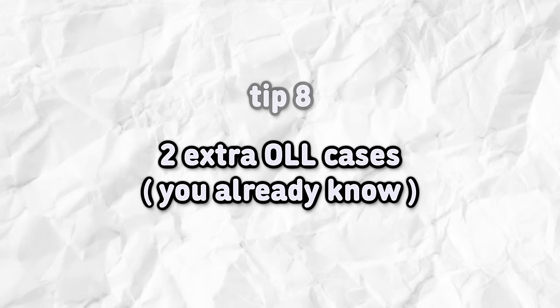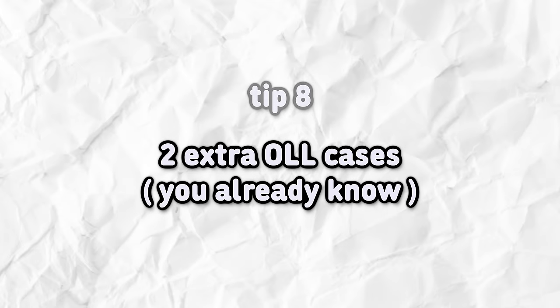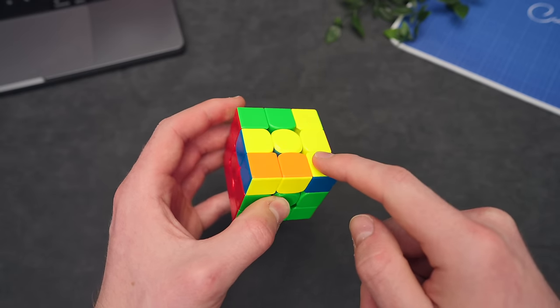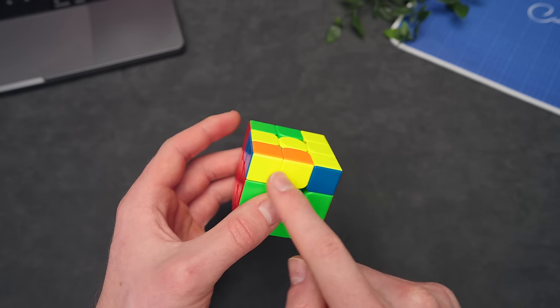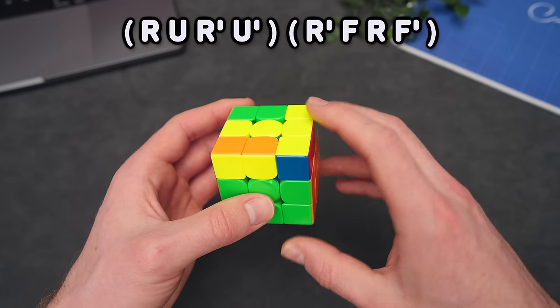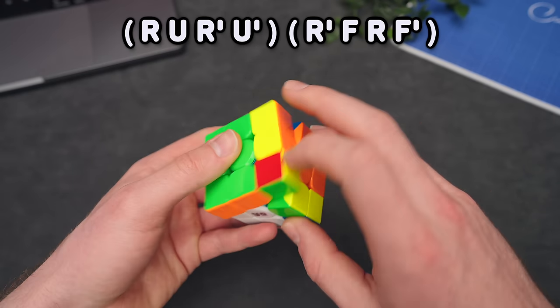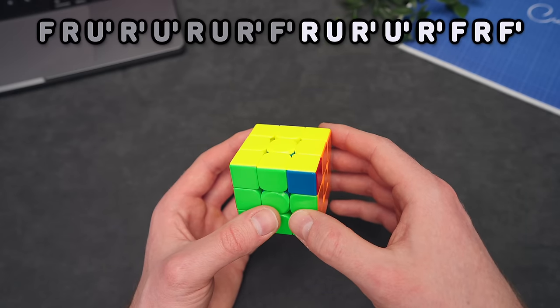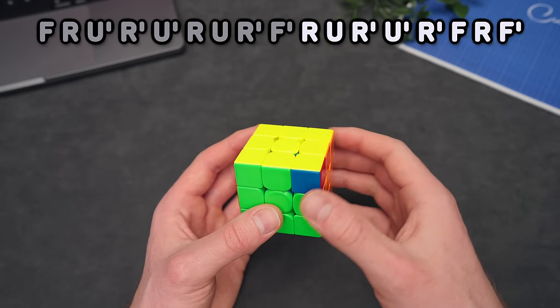Next up, I'm going to show you two more OLL cases that you actually already know because you know the Y perm. The first one is here. So we have a T right now, but instead of headlights right here, we have a bar here and here. If you have that, hold the T just like this, do a sexy move and a sledge. This solves OLL in one step. And the reason I said that you actually already know this algorithm because this is the end part of a Y perm.